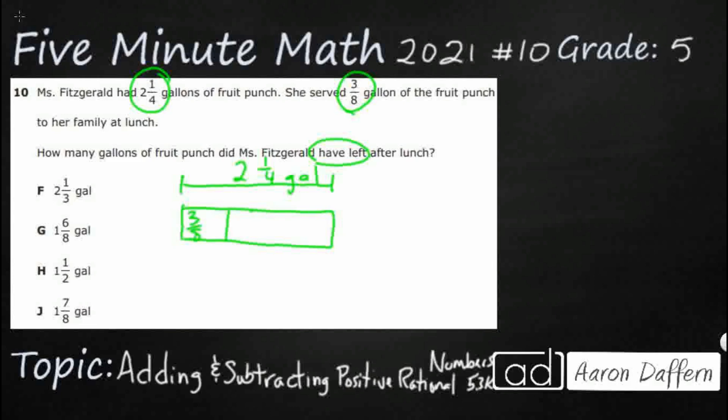And then she is going to serve, it doesn't look like she's serving a whole lot, so I'm going to do it like this, 3/8 of gallons. And then the question is, what does she have left? So that does look like we are going to do some subtraction. Looks like we can use 2 1/4 minus 3/8.